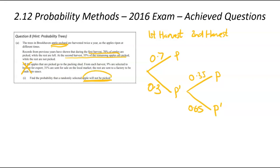Our question asks about apples not being picked, and that would relate to this branch here, because we've got not picked and not picked. Getting into our working, the probability of not picked will be equal to the multiplication of those two branches, 0.3 times 0.65. We plug that into our calculator, and we're going to get 0.195.